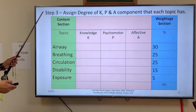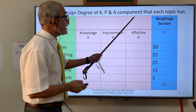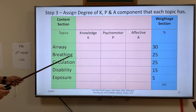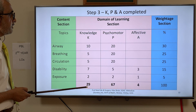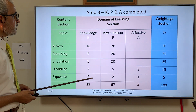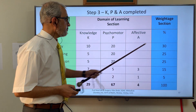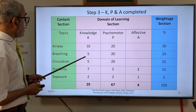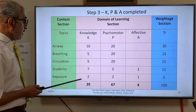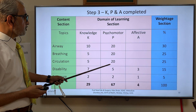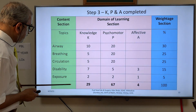Step three is to assign the degree of knowledge, psychomotor, and affective components for each topic, because each topic has a knowledge component, a psychomotor component, and an affective component. For Airway (30% total): 10% knowledge and 20% psychomotor. For Breathing (25% total): 5% knowledge and 20% psychomotor. For Disability and Exposure, we even have an affective component — 7% Disability with 5% psychomotor and 3% affective. The weighted column totals 100, and the domain columns also total 100.